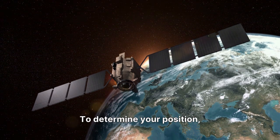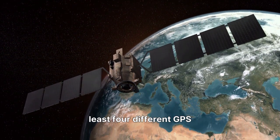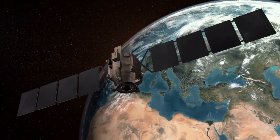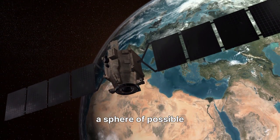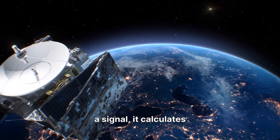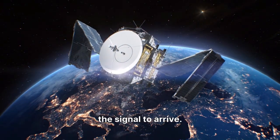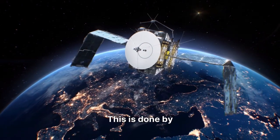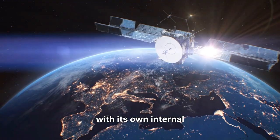To determine your position, your receiver needs to hear signals from at least four different GPS satellites. Why four? Because each signal provides a sphere of possible locations. When your receiver gets a signal, it calculates the distance to that satellite based on how long it took for the signal to arrive. This is done by comparing the signal's timestamp with its own internal clock.